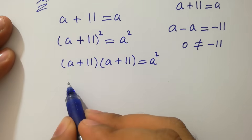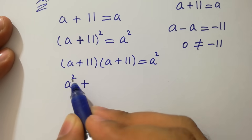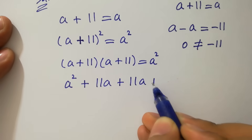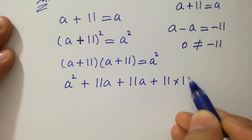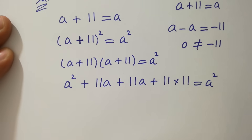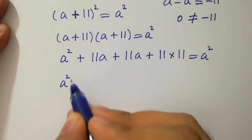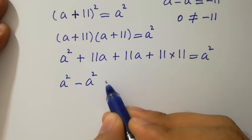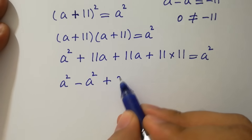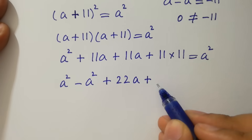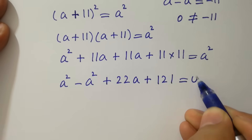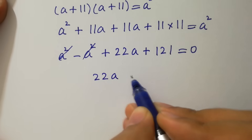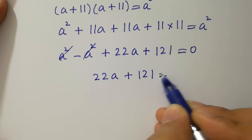Simplify this: a times a gives a square, plus 11a plus 11a plus 11 times 11 equal to a square. The a square on the left-hand side cancels, giving 22a plus 121 equal to 0.